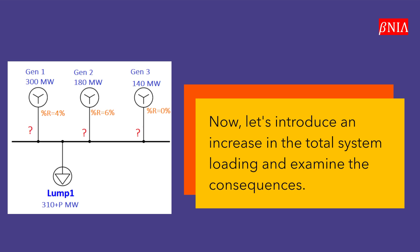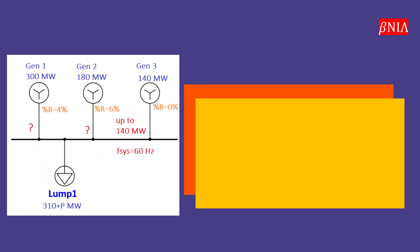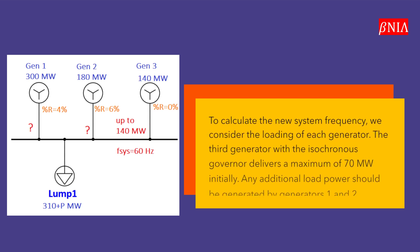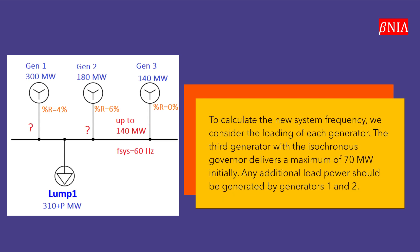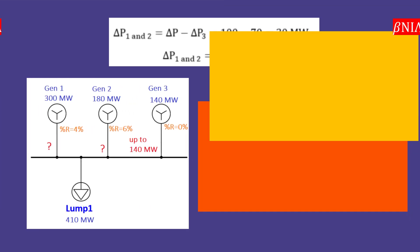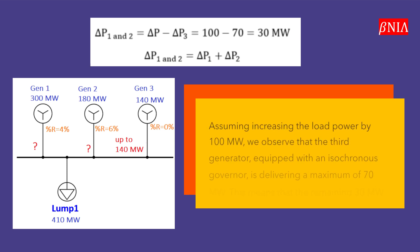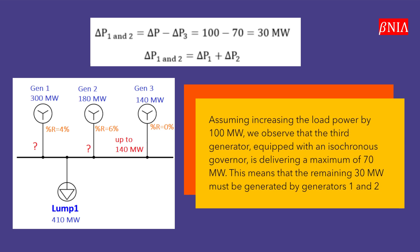Now, let's introduce an increase in the total system loading and examine the consequences. To calculate the new system frequency, we consider the loading of each generator. The third generator with the isochronous governor delivers a maximum of 70 MW initially. Any additional load power should be generated by generators 1 and 2. Assuming an increase in load power of 100 MW, the third generator, equipped with an isochronous governor, is delivering a maximum of 70 MW. This means the remaining 30 MW must be generated by generators 1 and 2.